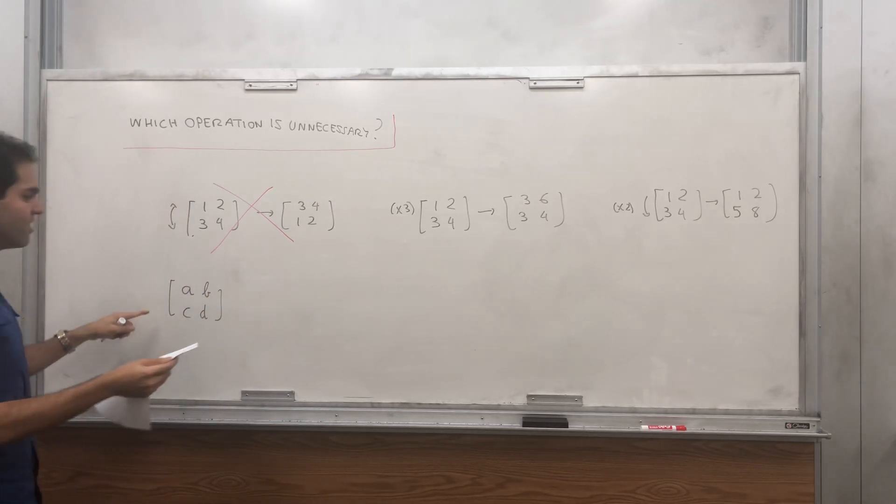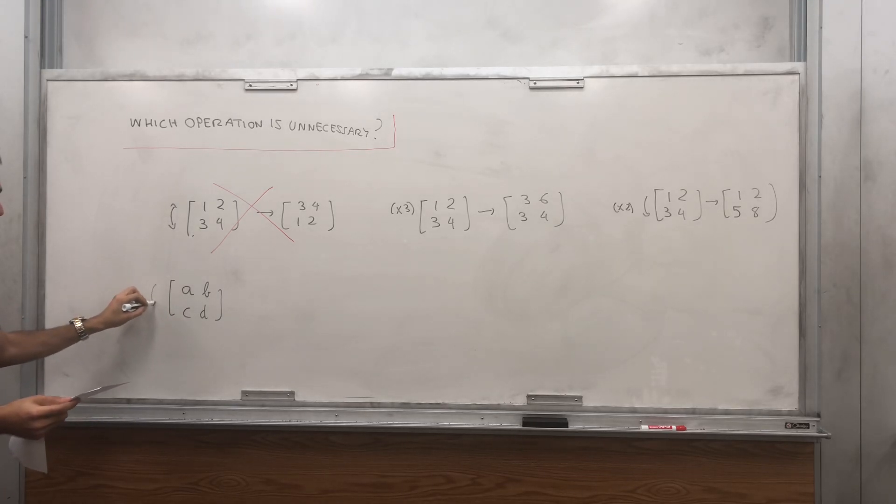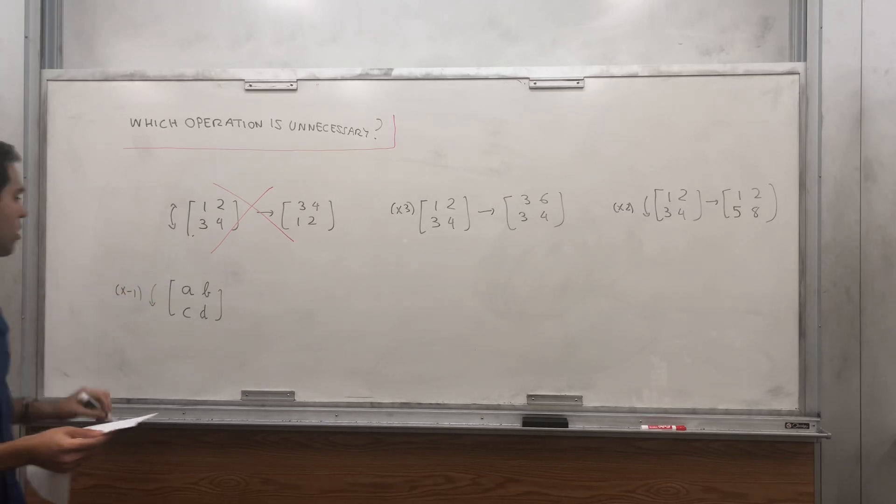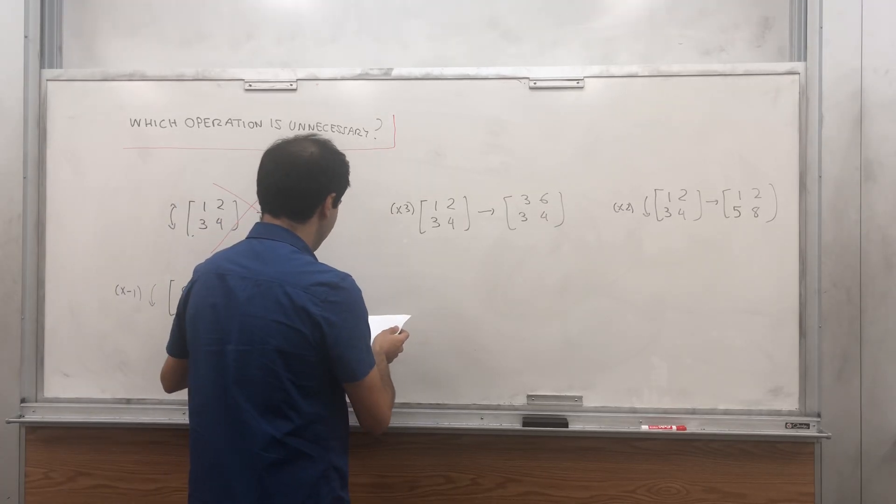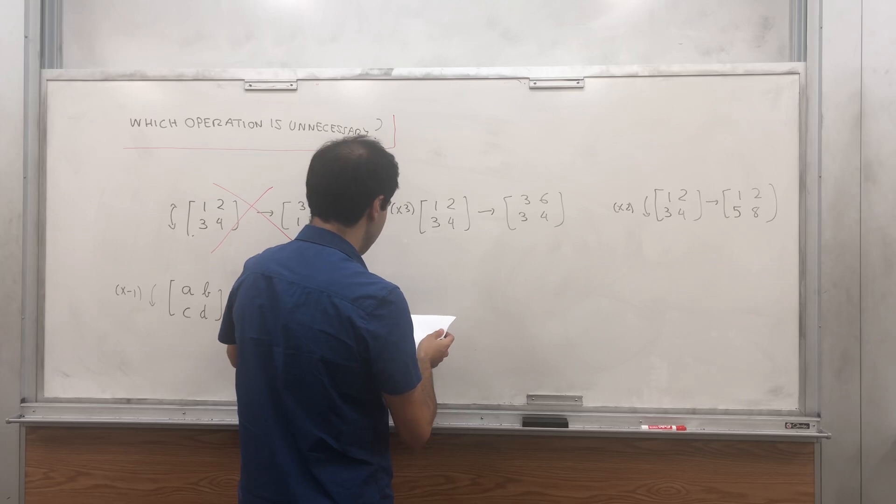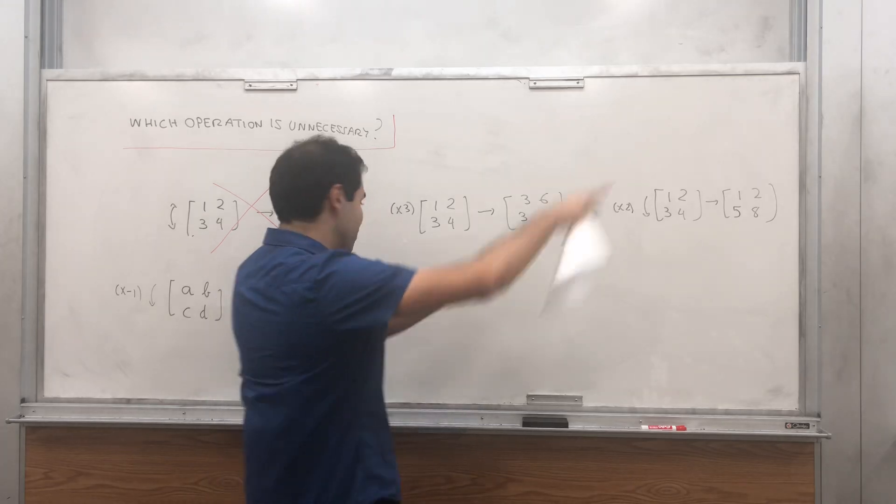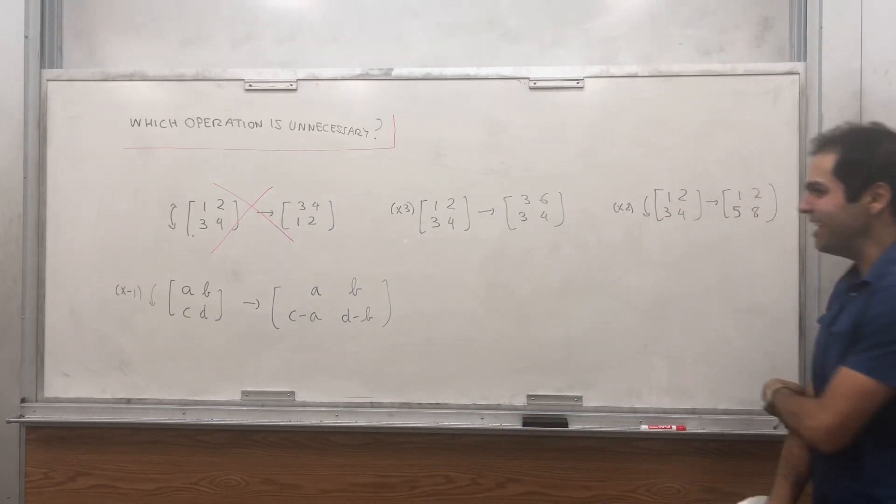Well, the idea is kind of to transfer this here. So let's, for example, subtract the first row from the second row, and what you get is you still have AB, but now C minus A, D minus B.